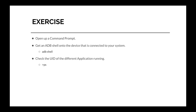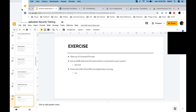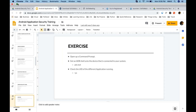Now for an exercise — I had already done this during the orientation class, but I want to make sure people who weren't part of that don't miss out, so I'm doing this again. In this exercise, what we basically do is open up a command prompt, get an ADB shell onto the device connected to our system, and then check the UID of the different applications that are running. I'm going to run Genymotion — more on these tools in the coming slides.